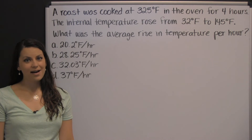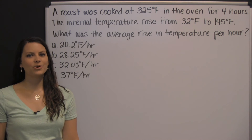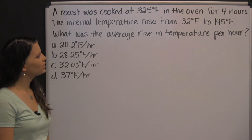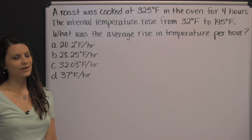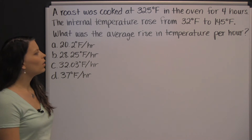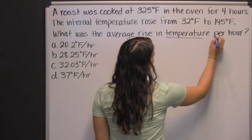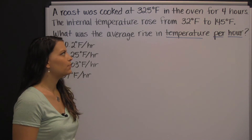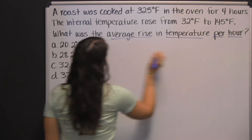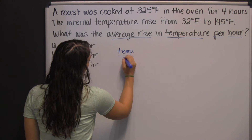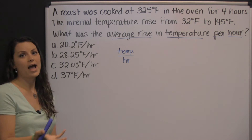You need to be prepared to do a lot of word problems on the HESI A2. Here's one example of a type of word problem you could encounter: a roast was cooked at 325 degrees in the oven for four hours. The internal temperature rose from 32 degrees Fahrenheit to 145 degrees Fahrenheit. What was the average rise in temperature per hour? The phrase 'temperature per hour' tells us how to set it up — it's temperature divided by hour, a unit rate. You can even see that in the answer choices: they all have a temperature divided by one hour.